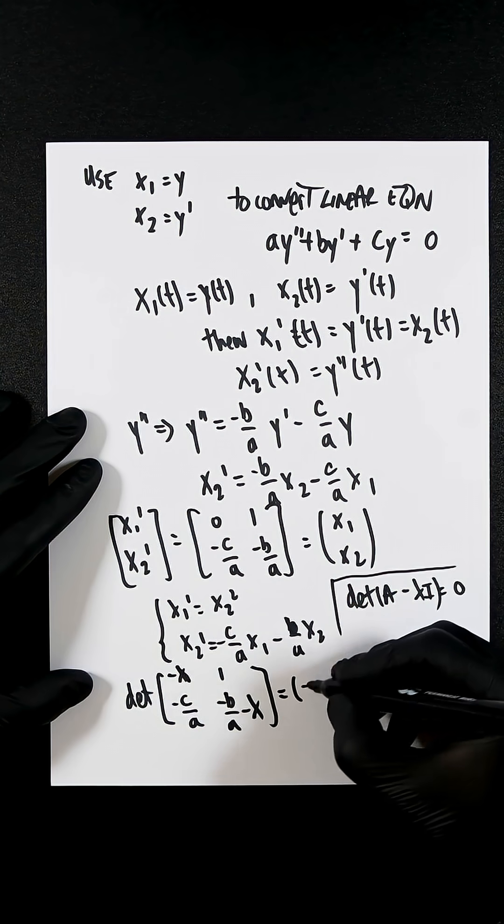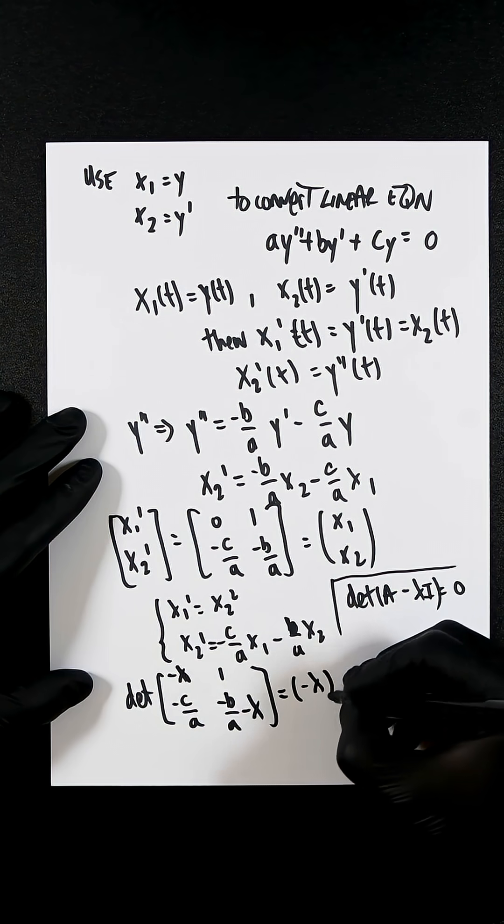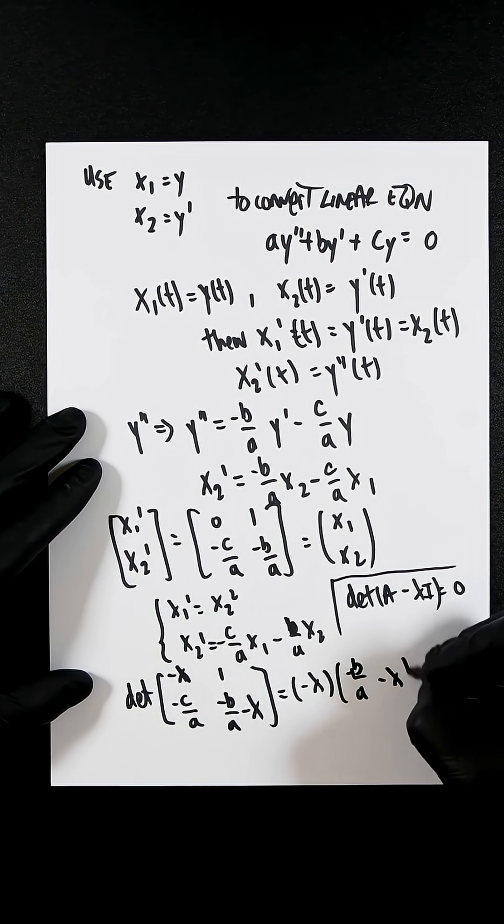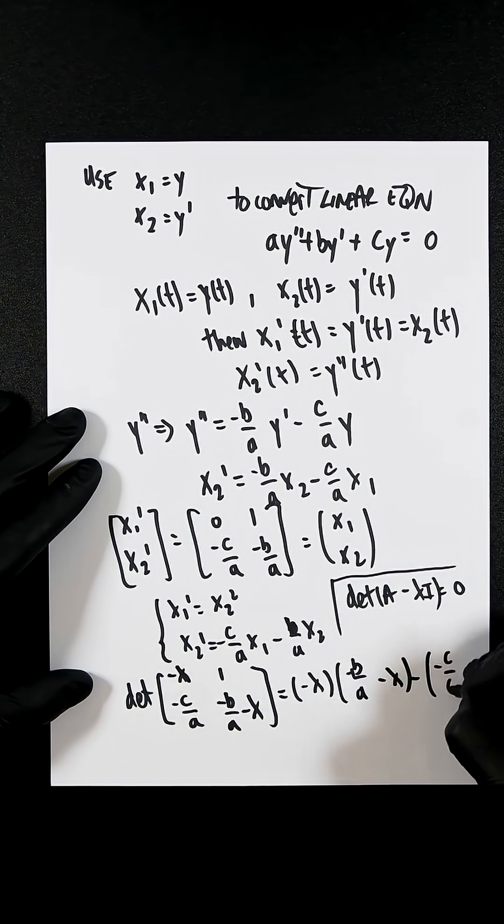So it's going to be minus lambda minus b over a minus lambda minus, well, 1 and then minus c over a.